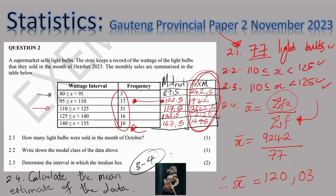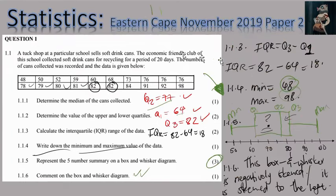This was the stats section, touching questions from different papers. The first question was from the Eastern Cape November 2019 Paper 2. I want to clarify: don't only practice with Gauteng papers — make sure you practice with all the papers that correspond with your ATP. If you have any questions, please ask me.